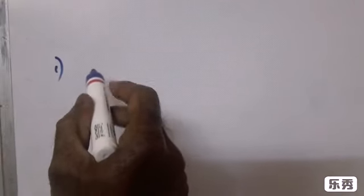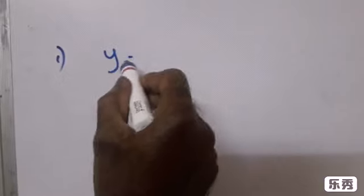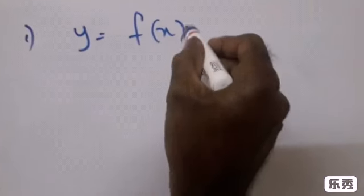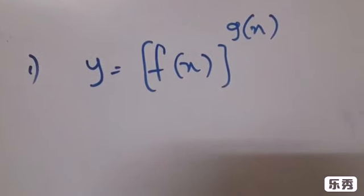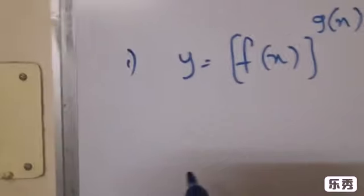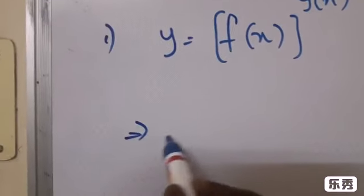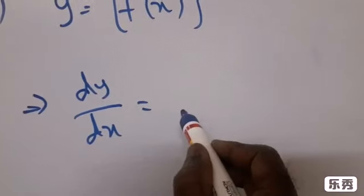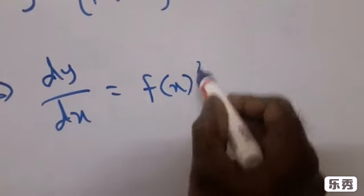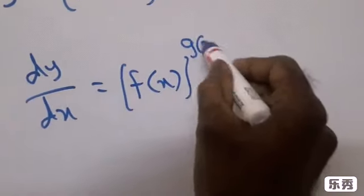Shortcut formula number 1 in differentiation: If y equals [f(x)]^[g(x)], then dy/dx is given by [f(x)]^[g(x)] into...